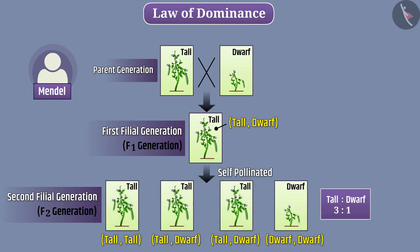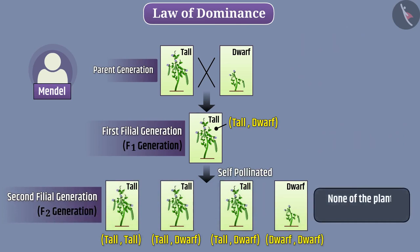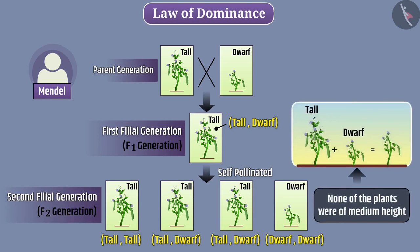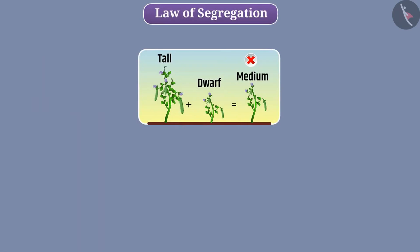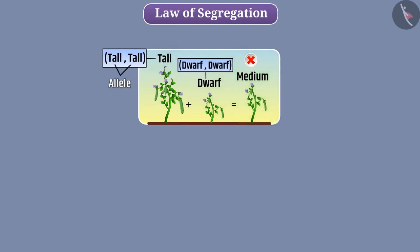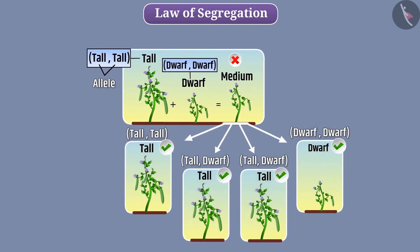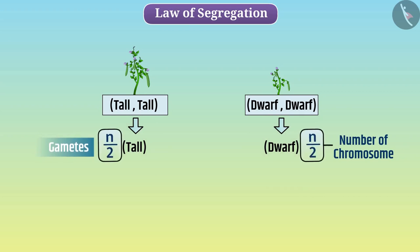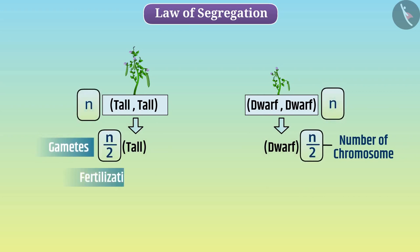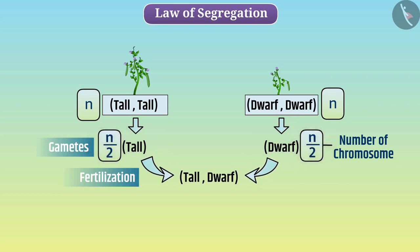Both tall and dwarf plants appeared in the F2 generation, and none of the plants were of medium height — that is, a mixture of tall and dwarf traits did not appear. On the basis of this understanding, Mendel introduced the law of segregation, according to which, alleles of a trait do not mix with each other, meaning that the alleles of a trait remain pure in the pair. During the formation of gametes, alleles get separated — each gamete gets only one of the two alleles in pure form. In this way, the number of chromosomes in gametes is half that of the other cells. At fertilization, the alleles of the male gametes pair again, and thus the number of chromosomes becomes normal.